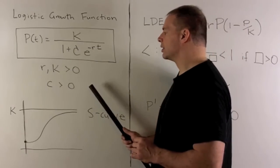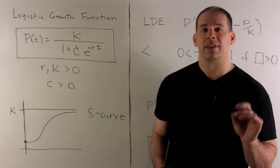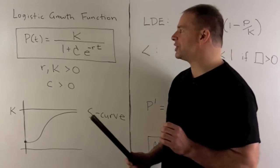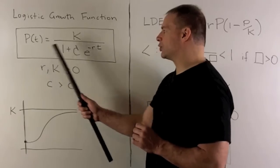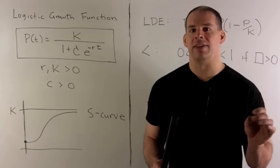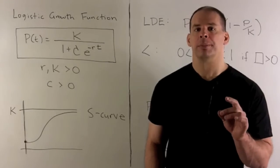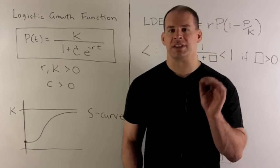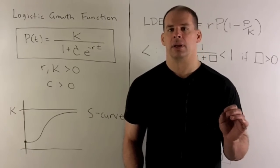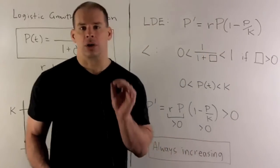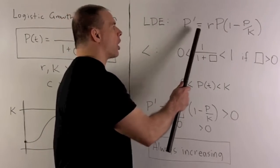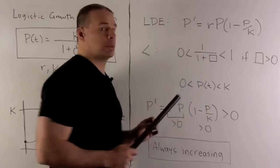With these conditions, the graph that comes out is going to be an S-curve. Rather than taking the first and second derivatives directly, here I'm going to use the logistic differential equation to get our graph. The logistic differential equation is given by P prime equals R times P times one minus P over K.